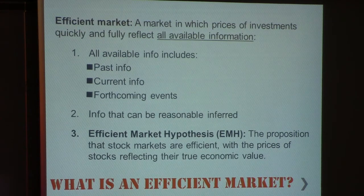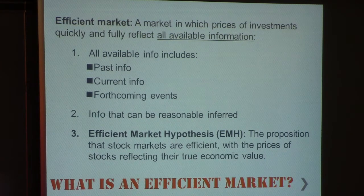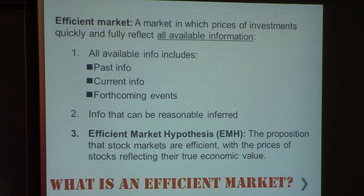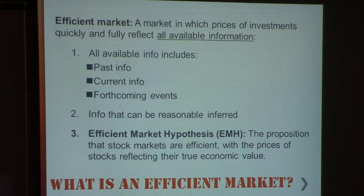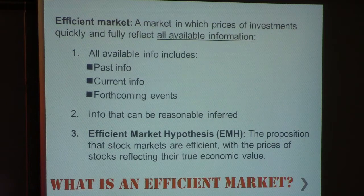Available information also includes info that can be reasonably inferred. For example, if the economy is going down, you can reasonably infer that some companies' incomes would go down, meaning their stock price would go down as well. This is called the efficient market hypothesis, which represents the fact that stock markets are efficient with prices reflecting their true economic value — explaining why stocks like Google or Apple are priced at their respective values.